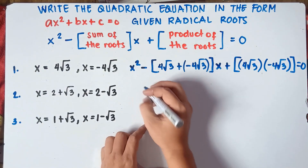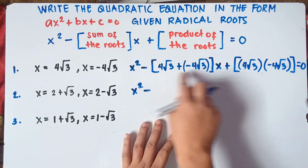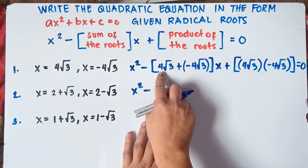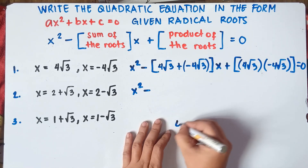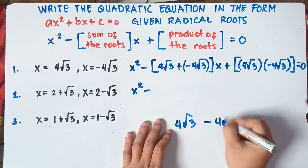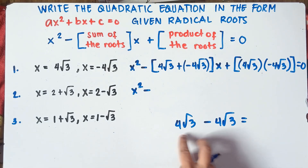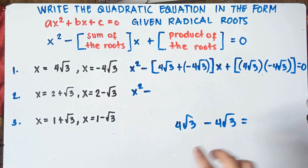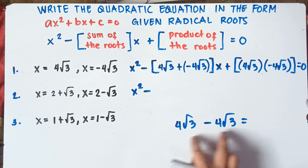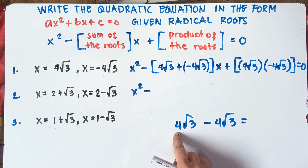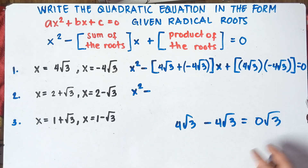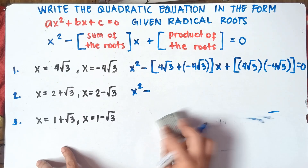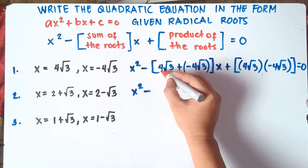So this will be: copy x squared minus. Now if you add this one — 4 square root of 3 plus negative 4 square root of 3 — you can cancel this out. Because the rules in radicals say addition of radicals: you can only add or subtract if they have the same radicals. So they have the same radicals, therefore 4 minus 4 is 0, then copy the radicals — square root of 3 — and 0 times square root of 3 is 0. So you can simply cancel this out.